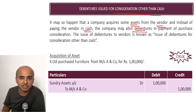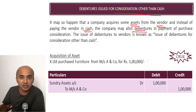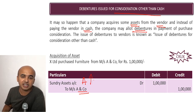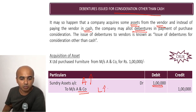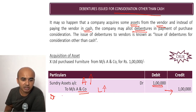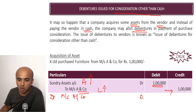Let us look at this entry: X Limited purchased furniture from Messrs A and Co for rupees 1 lakh. First we pass the entry for purchase of a fixed asset — debit furniture account, credit Messrs A and Co. Furniture is an asset; increase in asset must be debited, so we debit 1 lakh. Then credit the liability because we were supposed to give them money but have not yet — credit 1 lakh. Then we pass another entry for issue of debentures for consideration other than cash: debit Messrs A and Co — we are now allotting them debentures — 1 lakh, and credit debentures — 1 lakh.